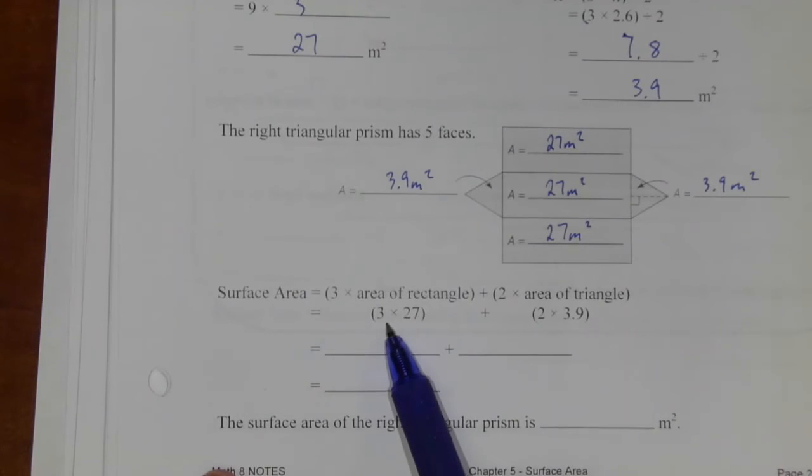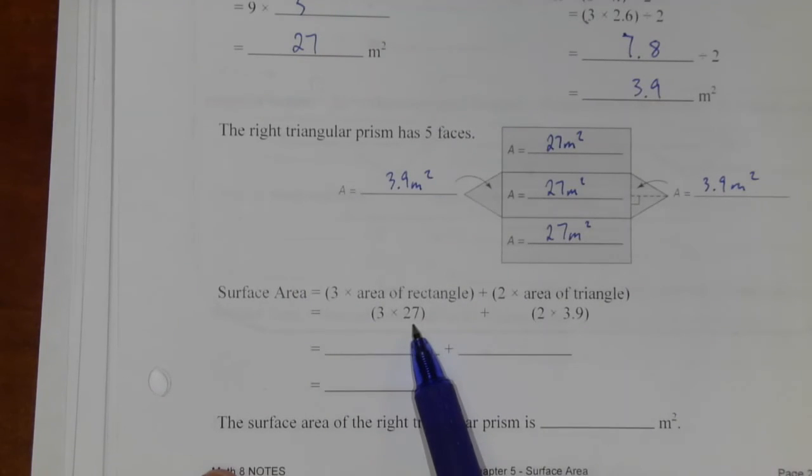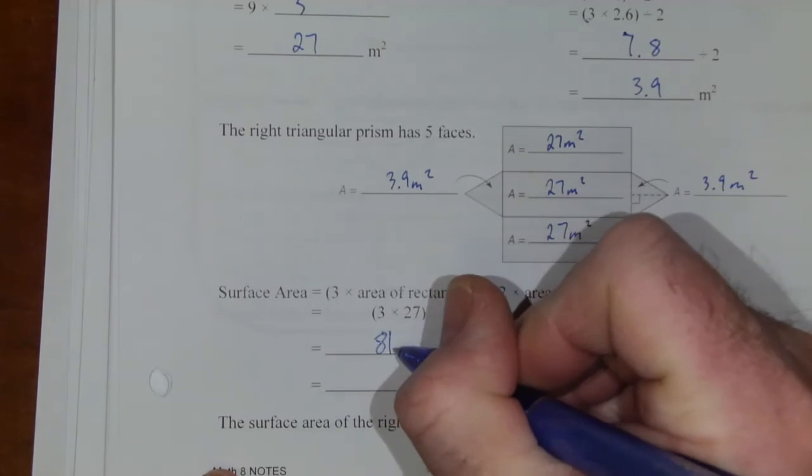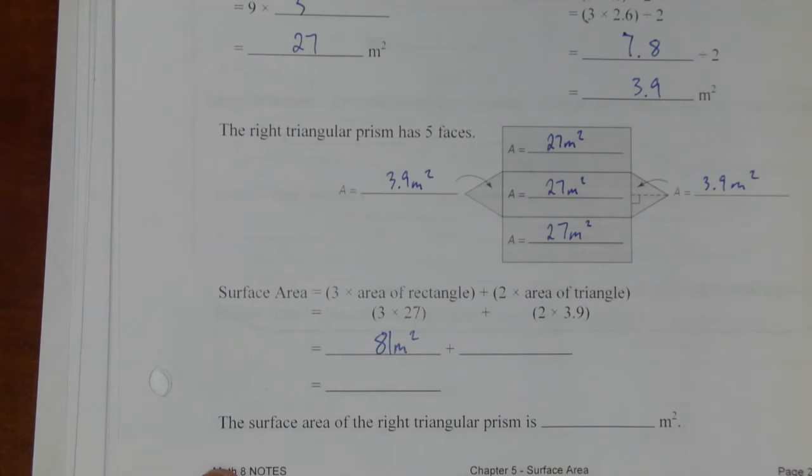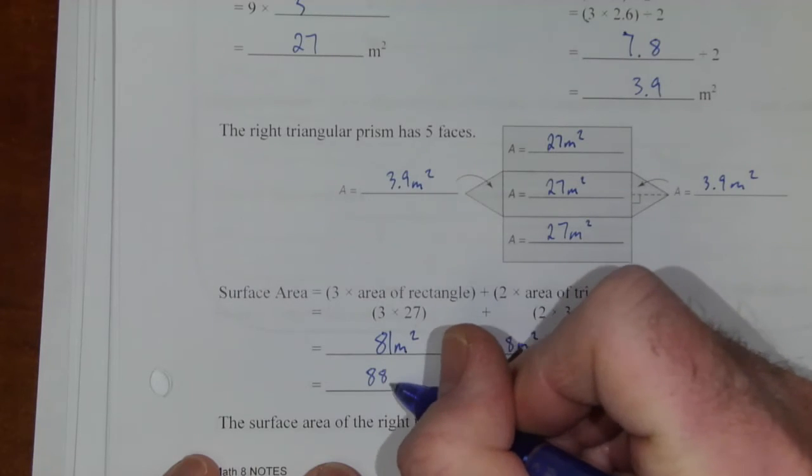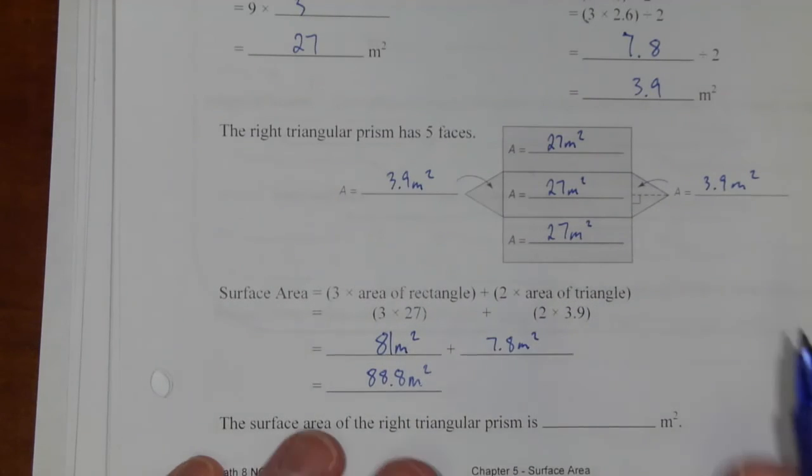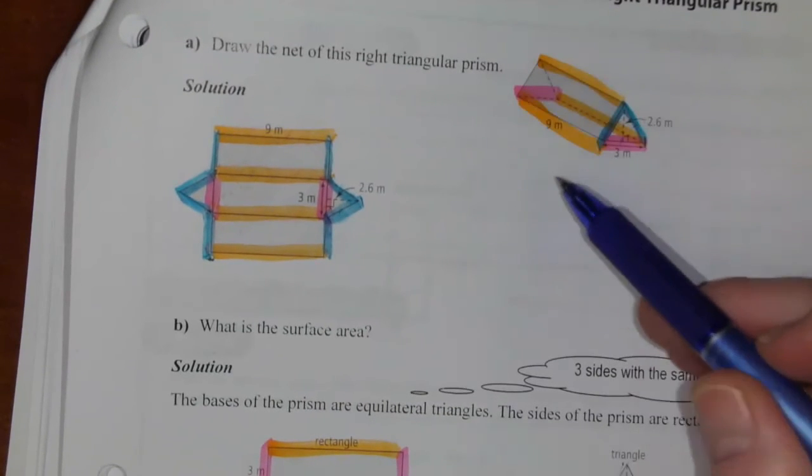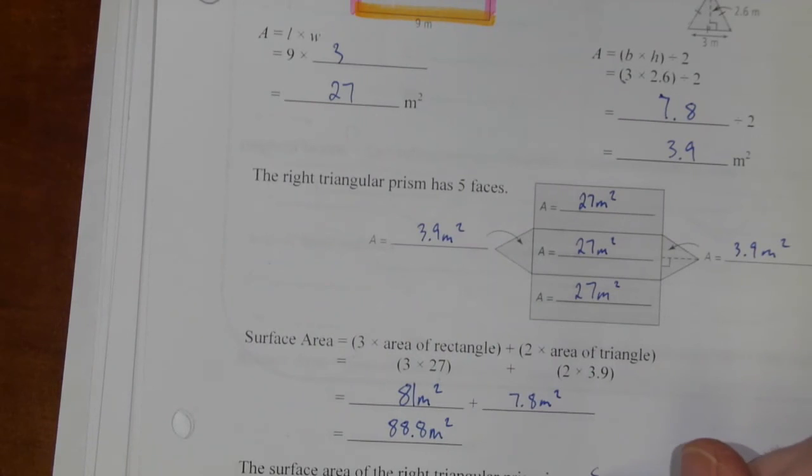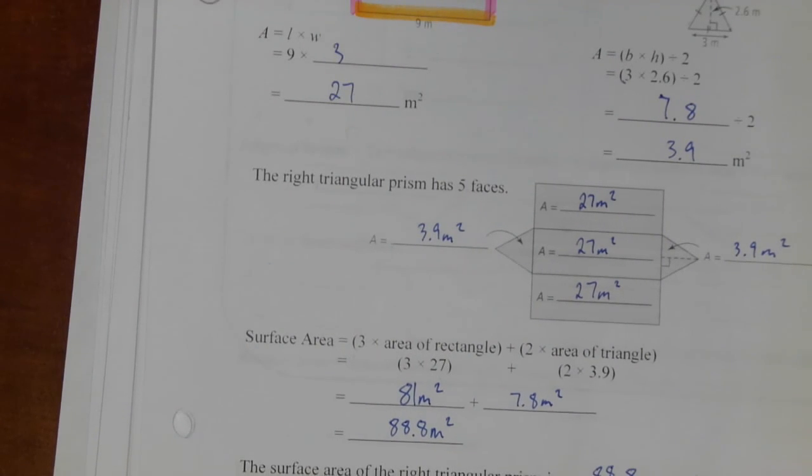So we've got 2 triangles and 3 rectangles. So we can take 3 times 27, and that is 81 meters squared. And 2 times 3.9 is 7.8 meters squared. When you add that up, you get 88.8 meters squared. So the surface area of this right triangular prism is 88.8 meters squared.